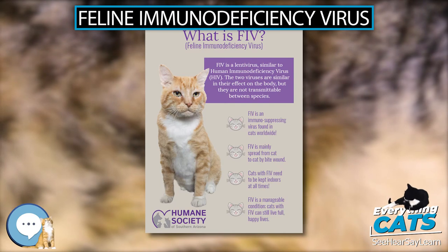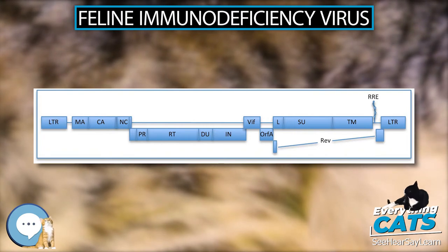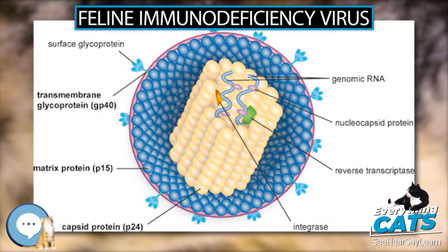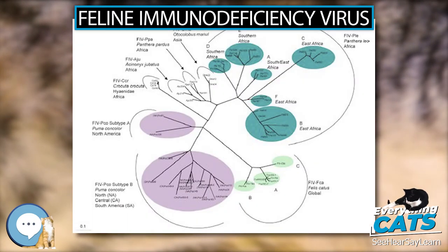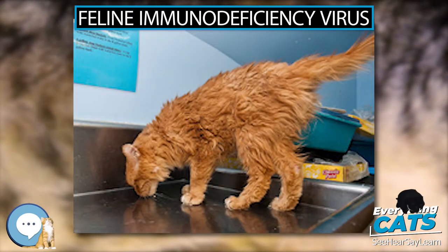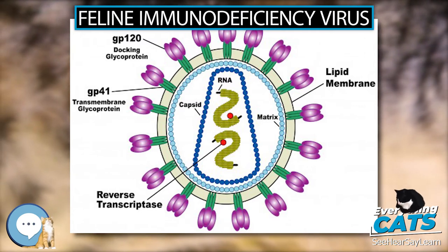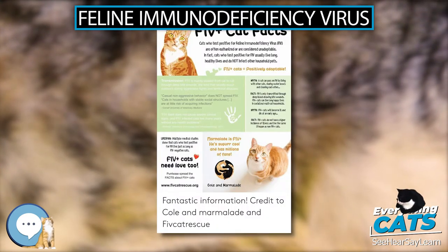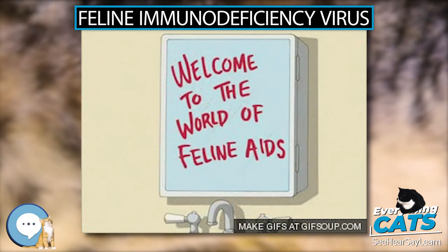The virus gains entry to the host cells through the interaction of the envelope glycoproteins of the virus and the target cell surface receptors. First, the SU glycoprotein binds to CD134, a receptor on the host cell. This initial binding changes the shape of the SU protein to facilitate interaction between SU and the chemokine receptor CXCR4. This interaction causes the viral and cellular membranes to fuse, allowing transfer of the viral RNA into the cytoplasm, where it is reverse transcribed and integrated into the cellular genome through non-homologous recombination. Once integrated, the virus can lay dormant in the asymptomatic stage for extended periods without being detected by the immune system, or can cause lysis of the cell.